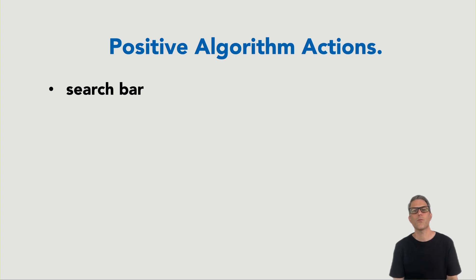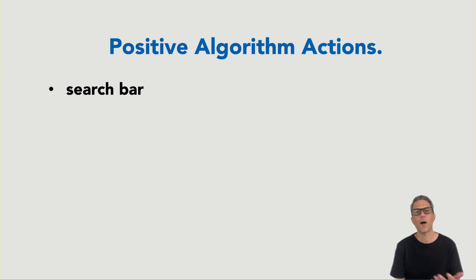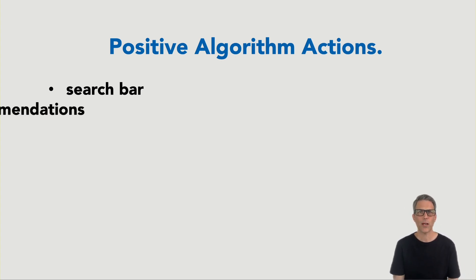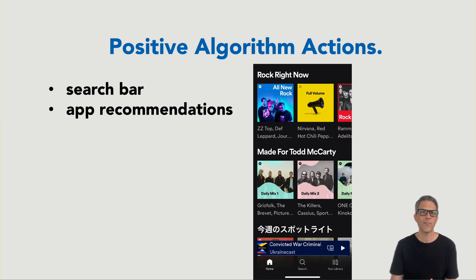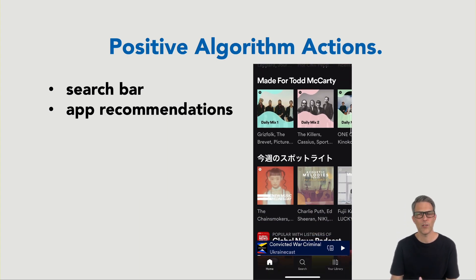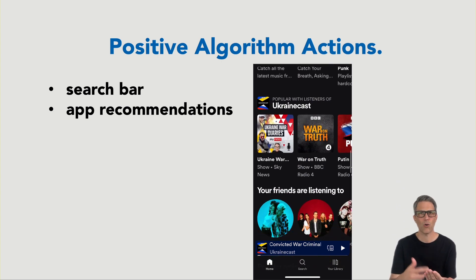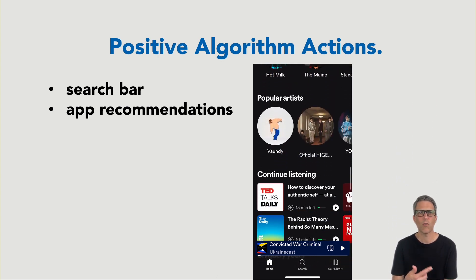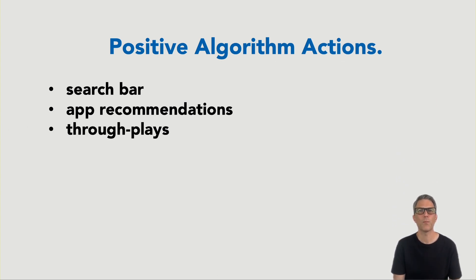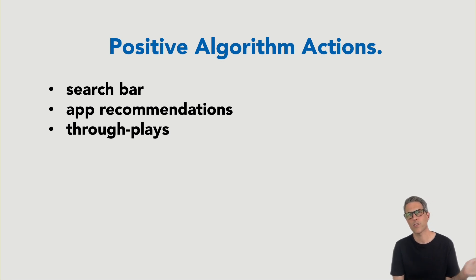Search — this is when you type the artist's name or song title into the Spotify search bar. That shows popularity because people are seeking you out without Spotify having to recommend you. App recommendations — these are all the different ways they recommend you if you look at the homepage of the Spotify app and just scroll. Those are all recommendations. Through plays — this is when the user listens to the whole song without skipping.